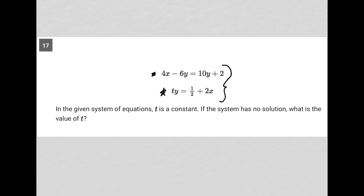The first thing I notice is that this first equation can be simplified because I have like terms here, but I'm going to read the question before I do all that just to make sure I'm doing the right thing. So the question says, in the given system of equations, t is a constant. If the system has no solution, what is the value of t? All right. So the hint here is that the system has no solution.